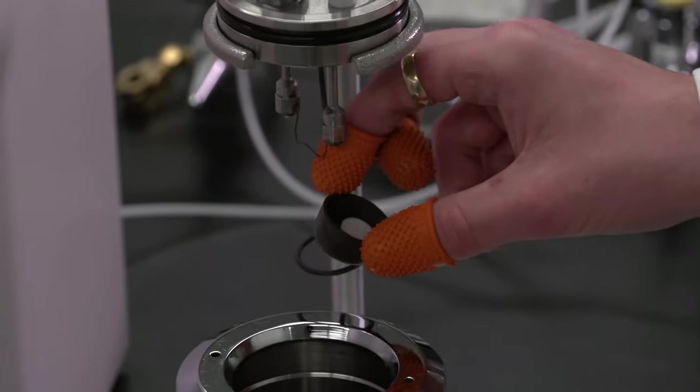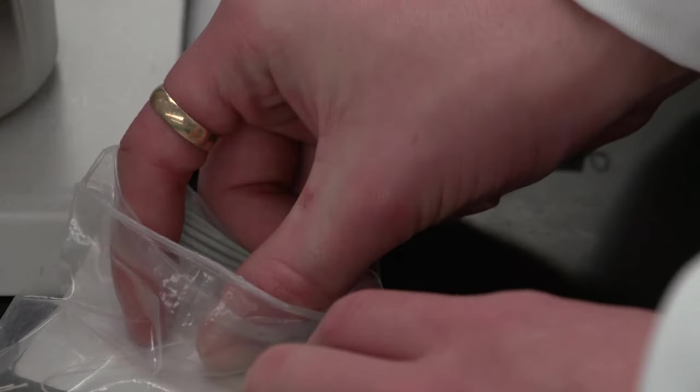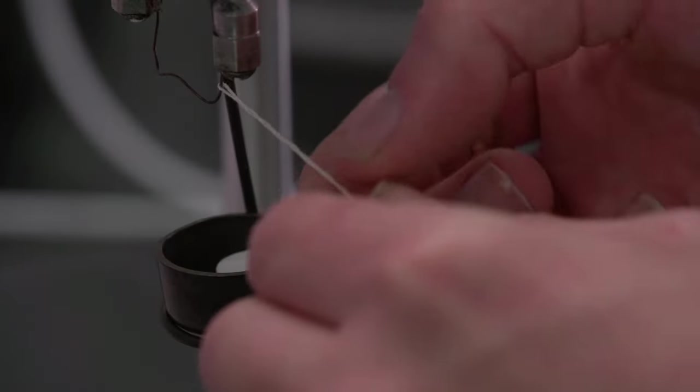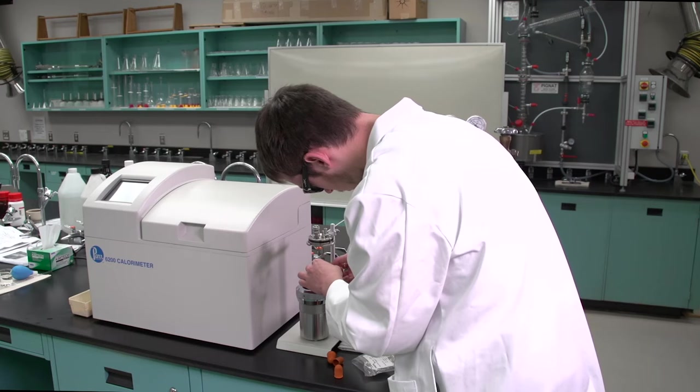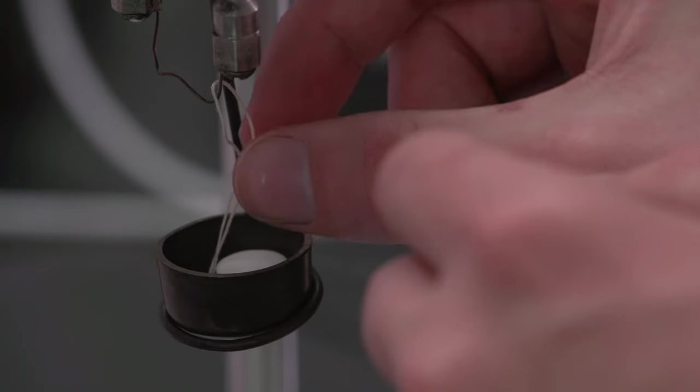Place the sample cup on the cup holder. Loop a single piece of cotton thread over the ignition wire. Double the thread on itself, twisting to form a single strand, and feed it into the sample cup.